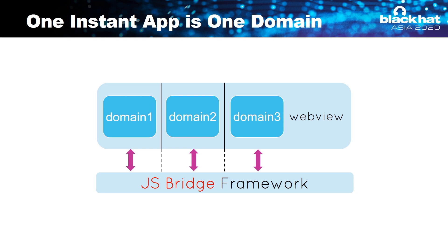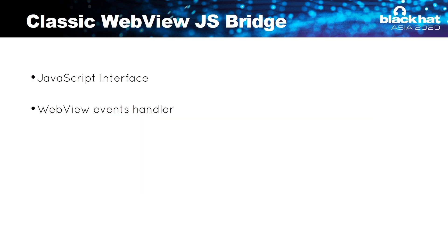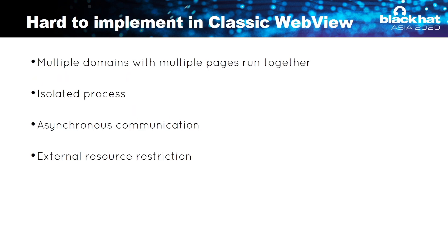We can abstract the communication between an instant app and JSBridge as multiple domains communicating with JSBridge. The isolation between domains is supported by WebView, and bypassing the same-origin policy directly is very difficult. So our target is JSBridge. In the classic WebView, the two most frequently used methods are AddJavascriptInterface and WebView event handlers. But there are some features that are hard to implement with the classic WebView in the instant app environment, such as process isolation and sync communication.